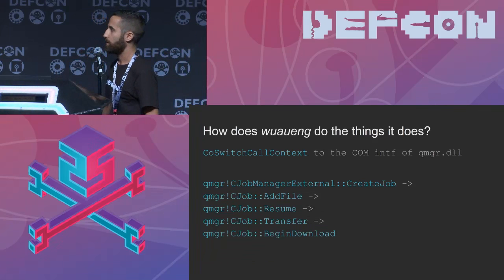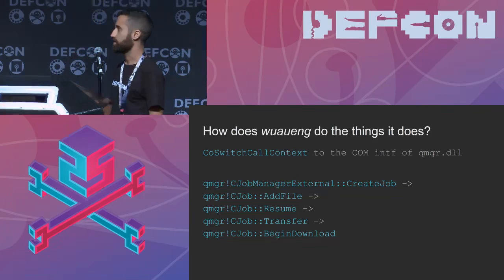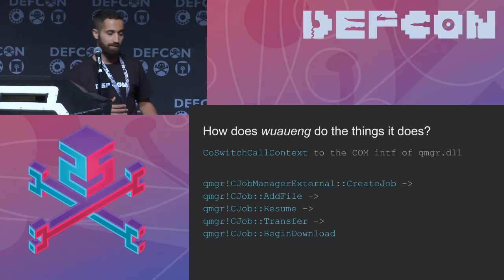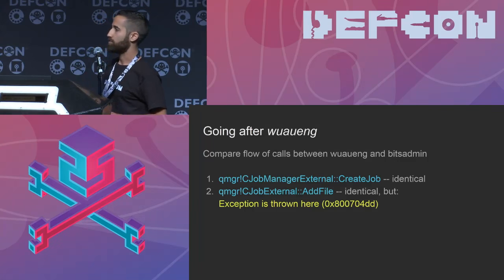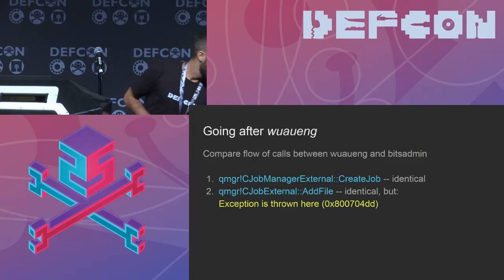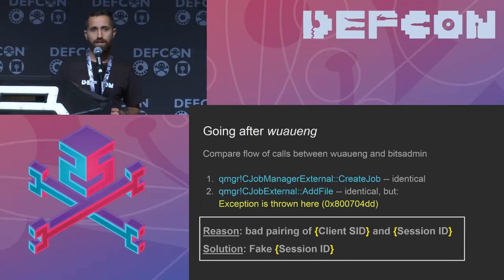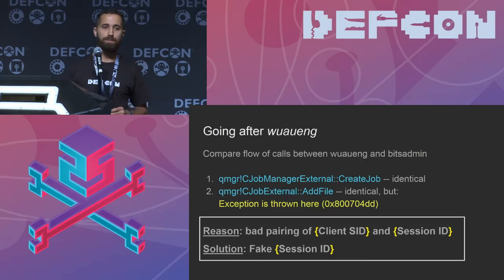The next step, like we did on the command line, is adding a file definition. Then, only when you call explicitly to Resume, the job will start and transfer the files. The two last calls are actually made by the BITS service itself internally when it decides a new transfer chunk should be transferred. So I compared these two flows — the valid one from Windows Update and the failed one from PSExec. The first call was identical in parameters and succeeded in both. The second call was also identical in parameters, but we got an exception when running from PSExec.